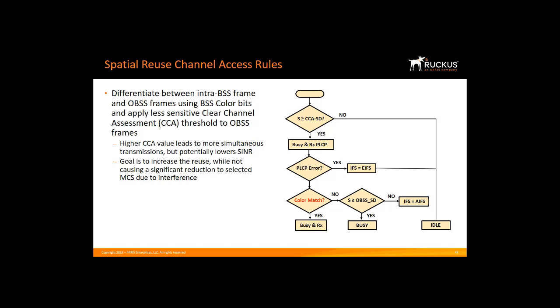The actual level will depend upon your deployment — you can set any signal you want as it is programmable. As more deployments are done, best practices for levels will be determined. It's going to be adaptive. Using adaptive clear channel assessment, an 802.11AX radio can raise the signal detect threshold for inter-BSS frames while maintaining a lower threshold for intra-BSS frames. BSS coloring can thus potentially decrease the channel contention problem that is symptomatic of existing low signal detection thresholds.